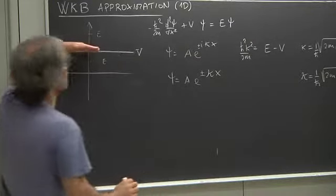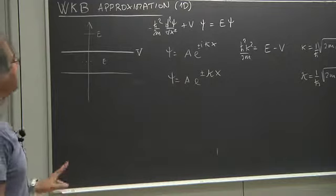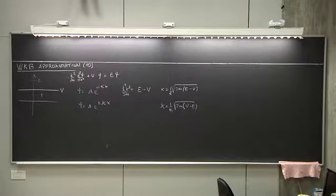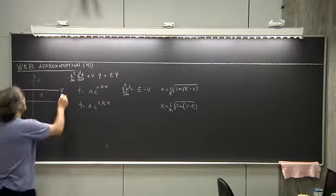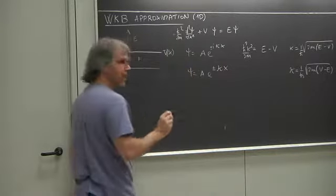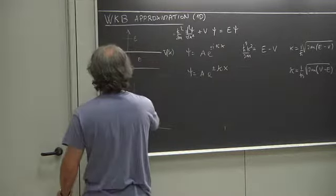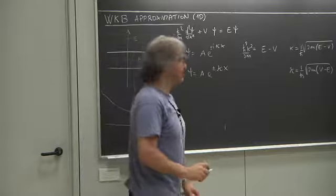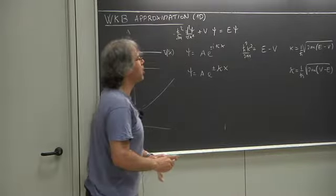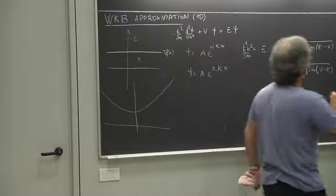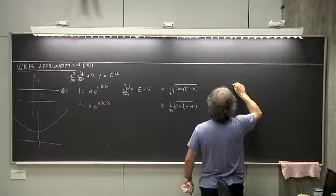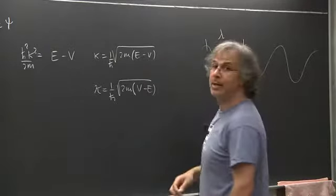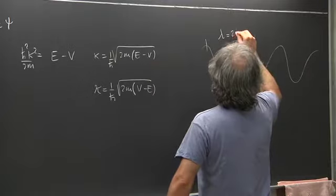What happens if the potential depends on x? If it depends on x in a wild way, there is nothing to do except put it on a computer. But if it depends on x in a smooth enough way — something smooth — then maybe we can do something.